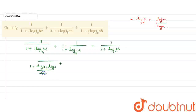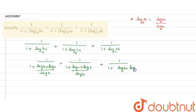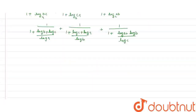So we get: 1 upon 1 plus log c plus log a upon log b, and 1 upon 1 plus log a plus log b upon log c.